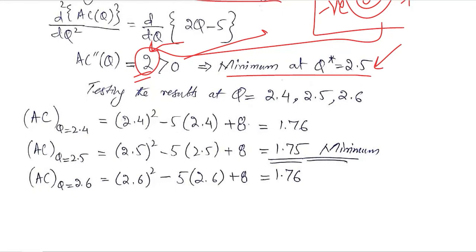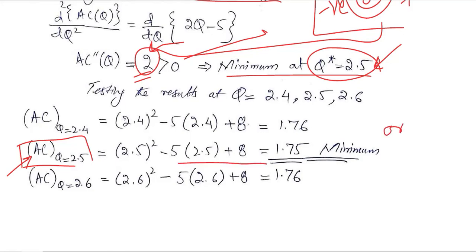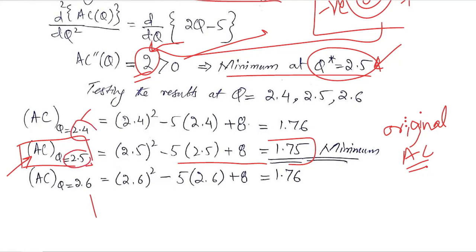The optimizing value of q is 2.5, and we substitute this into the original average cost function to verify. We experiment with a lower value of 2.4 and a higher value of 2.6, just to confirm that average cost is actually minimized at q equals 2.5.